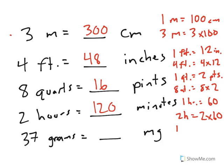And last, grams to milligrams. In 1 gram, there are 1,000 milligrams. So that would mean that 37 grams is equal to 37 times 1,000 or 37,000 milligrams.